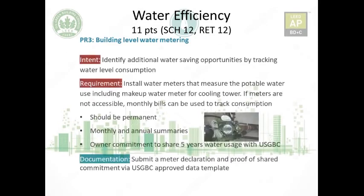Prerequisite three: building level water metering. The intent is to identify additional water-saving opportunities by tracking water consumption. The requirement is to install water meters measuring potable water use, including a makeup water meter for cooling towers if present. If meters are not accessible, tracking via monthly bills is acceptable. Meters should provide permanent monthly and annual summaries, and there must be an owner commitment to share five years of water usage data with USGBC. Documentation includes a declaration and proof via the USGBC data template, and photos of the meters.